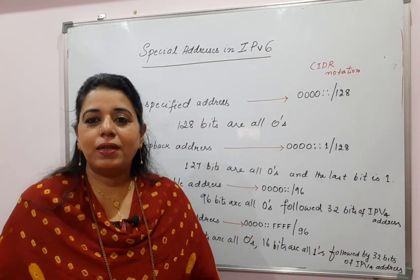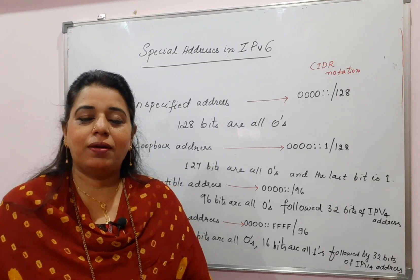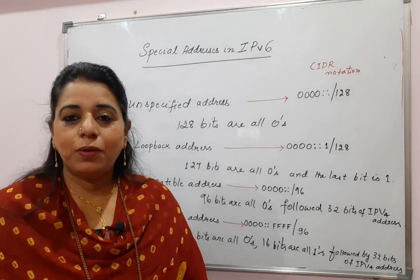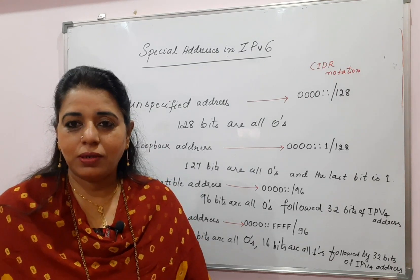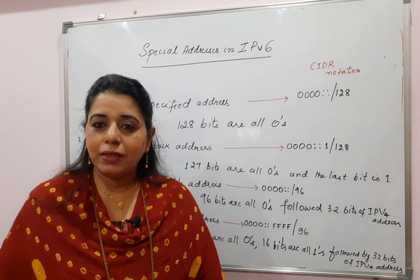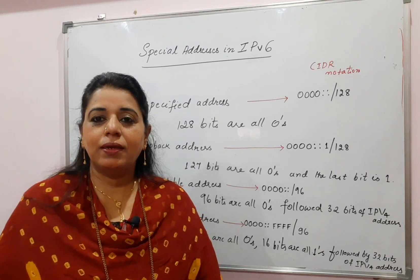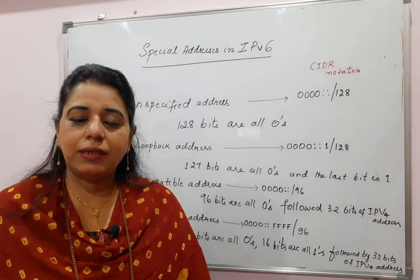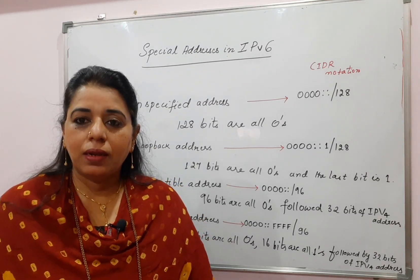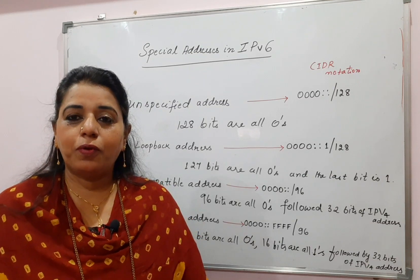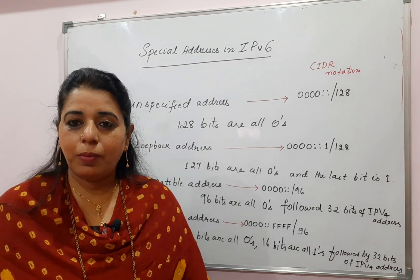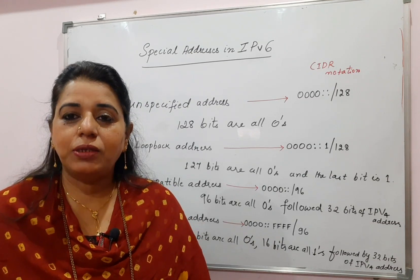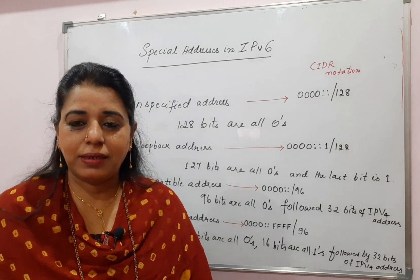Just try to recall the IPv4 special addresses. The first one in the list was the this-host address, then you had the limited broadcast address, the third one was the loopback address, the fourth one was a block of private addresses, and the last one was multicast addresses.